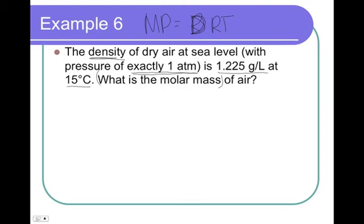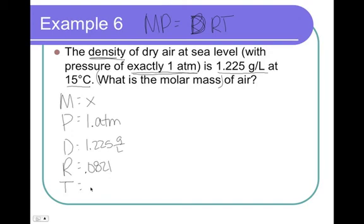So, spell out our variables: M, P, D, R, T. Molar mass is X. Pressure is exactly one atmosphere. So, what that means is that our pressure has an infinite number of sig figs because exactly means that it's 1.000 never ending, which means infinite number of sig figs. Density, they said, was 1.225 grams per liter. R is still 0.0821. And temperature, 15 degrees Celsius, converts to 288 Kelvin.